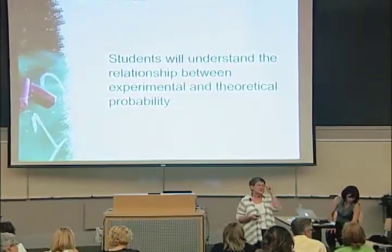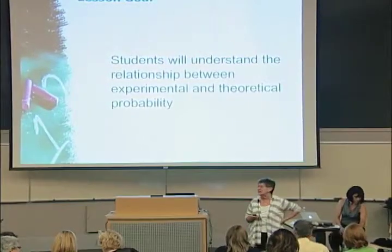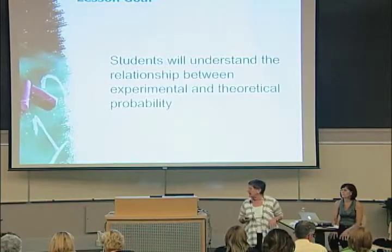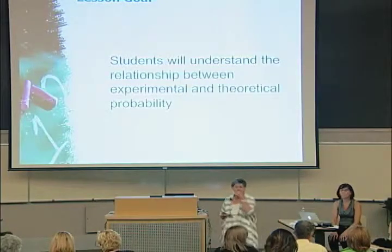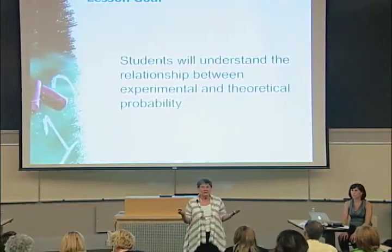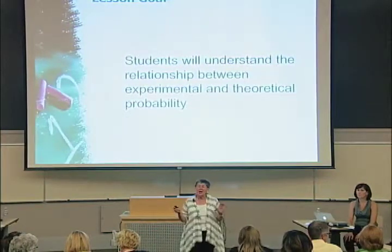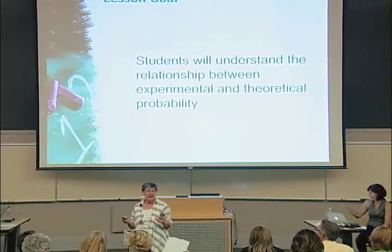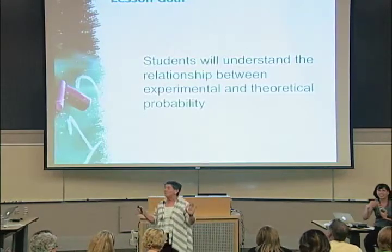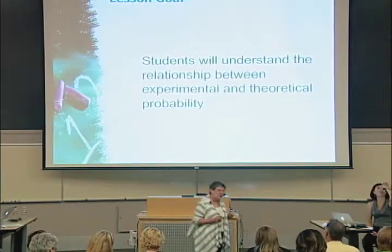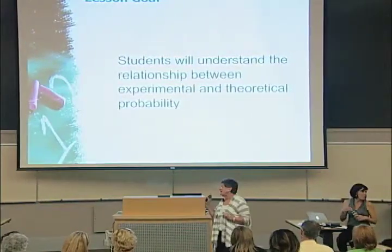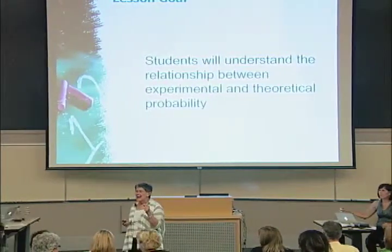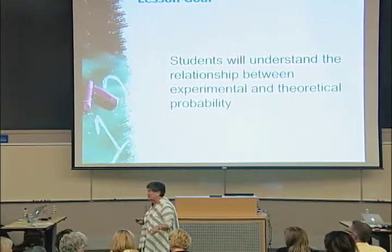The goal is to understand experimental and theoretical probability in relationship to each other. Would someone like to tell me what they learned from that task? I noticed a lot of people were very focused; I also noticed a few who were probably doing something else during this time period. I was aware of it and got my grade book — and some students can't even stop, they're still spinning.